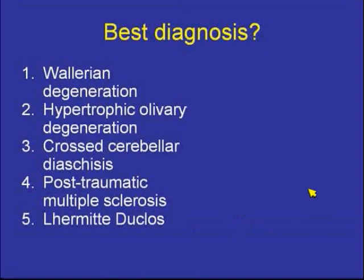Best diagnosis here — would you call this Wallerian degeneration, hypertrophic olivary degeneration, crossed cerebellar diaschisis, post-traumatic multiple sclerosis, or Lermitte-Duclos syndrome?